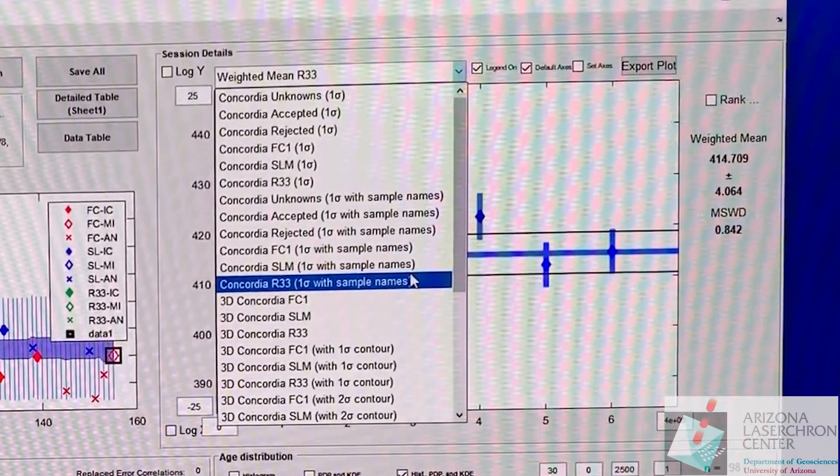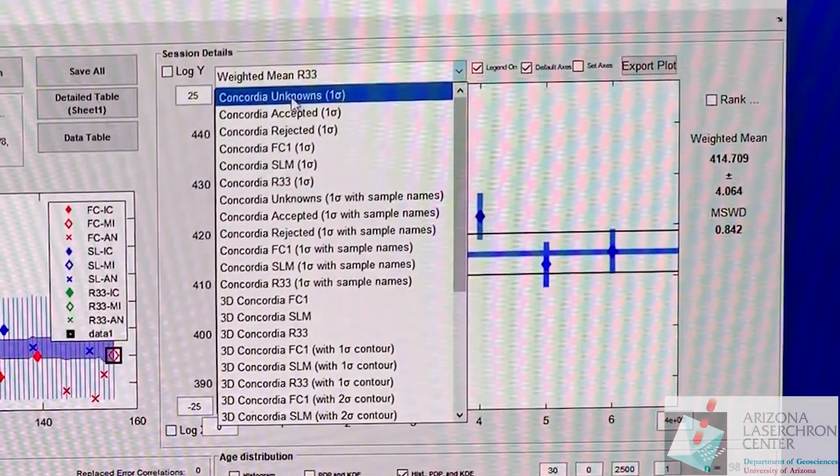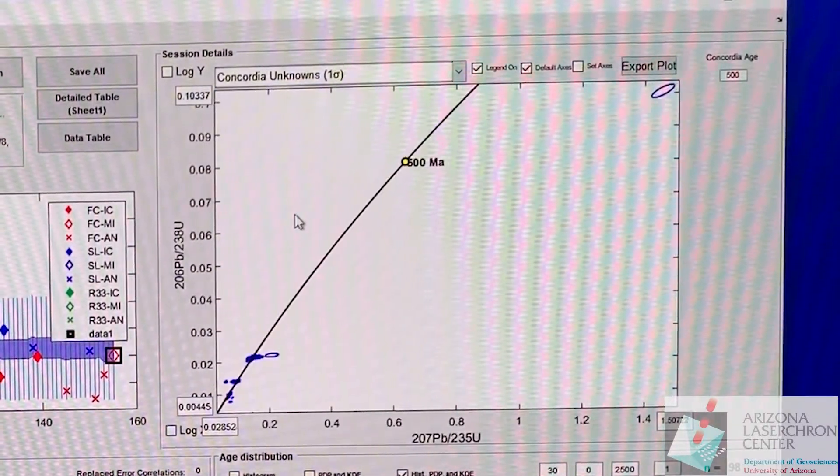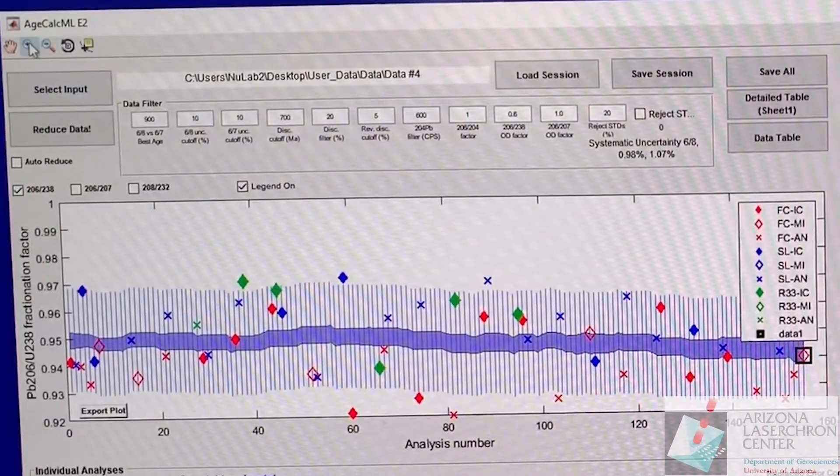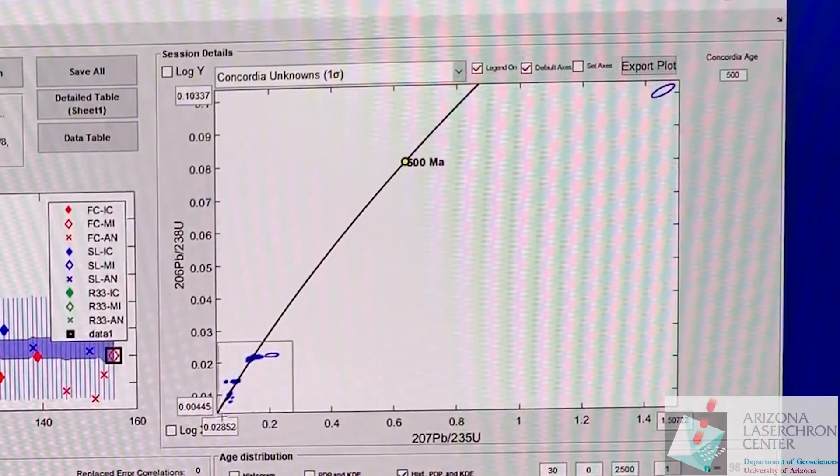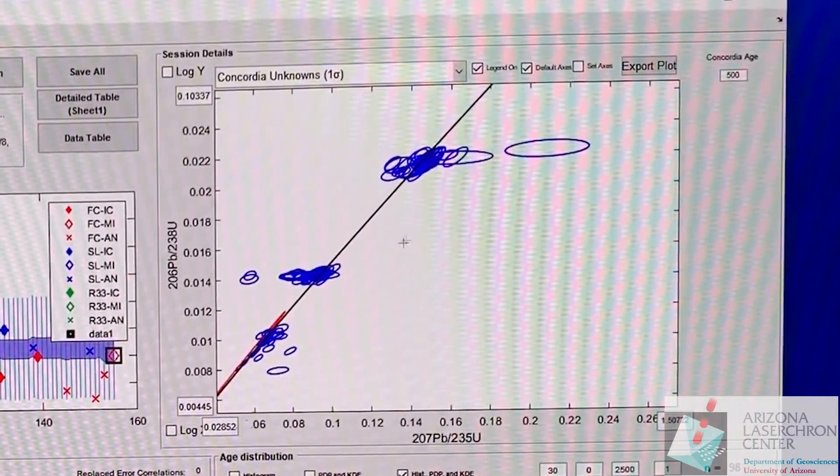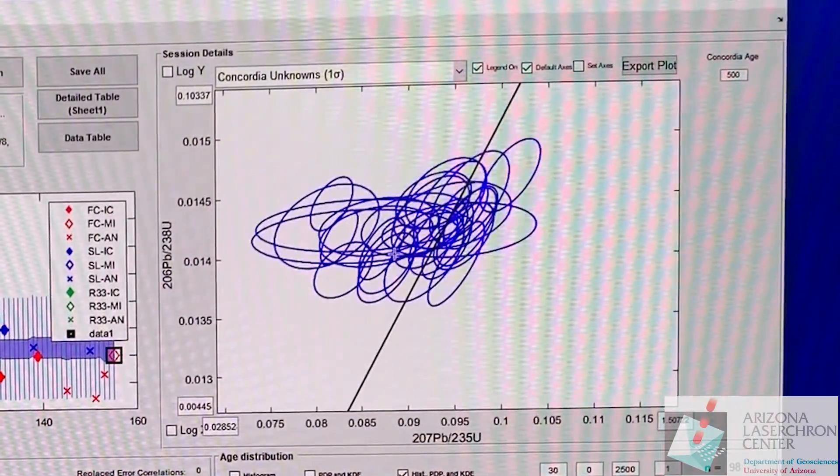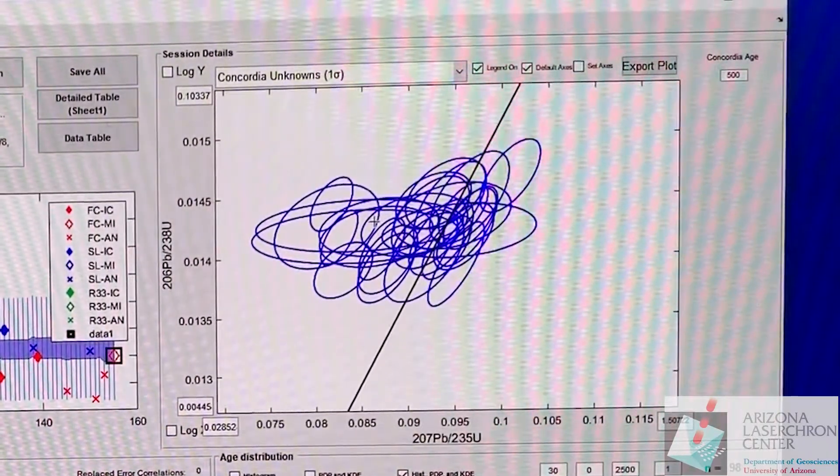The other thing that you might want to look at is the unknowns. This is kind of a final check that I do. We're going to look at the unknowns and zoom in on these unknowns to see if we need to adjust the 6-4 factor. You just click and drag.